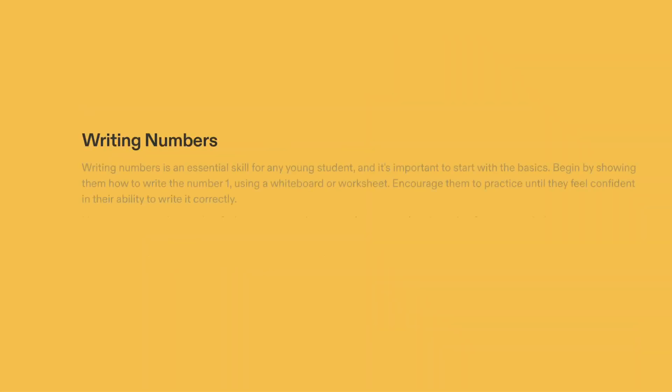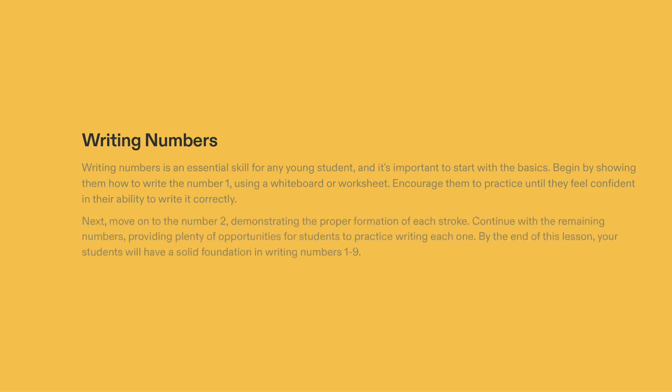Show the student the proper way to form the number one on a whiteboard or worksheet, and ensure they have adequate practice to feel confident in writing it correctly. Demonstrate the correct shape for each stroke of the number two. Subsequently, provide instruction and practice for the remaining numbers from three to nine. Through this lesson, the student will have acquired the skill of writing numbers from one to nine.